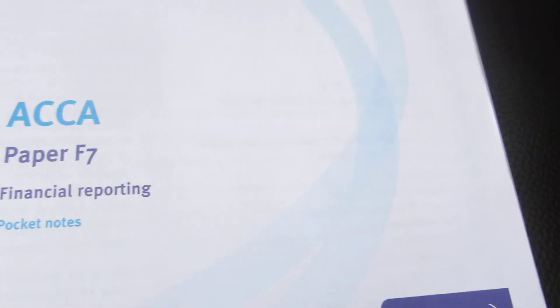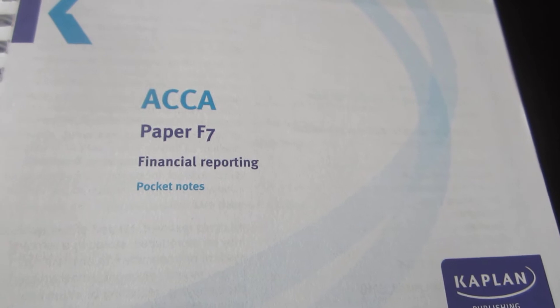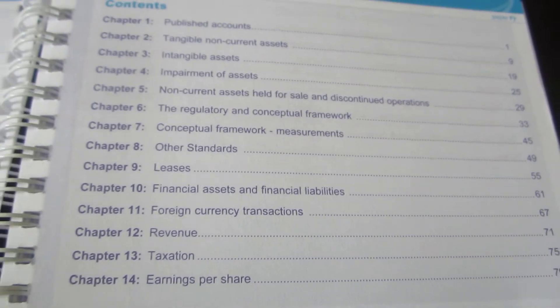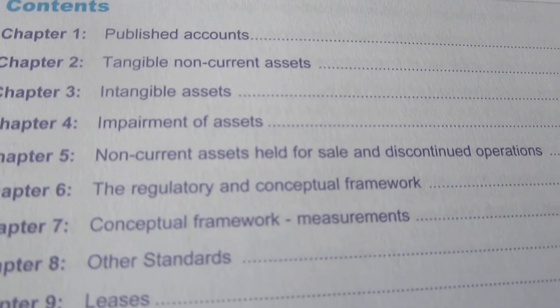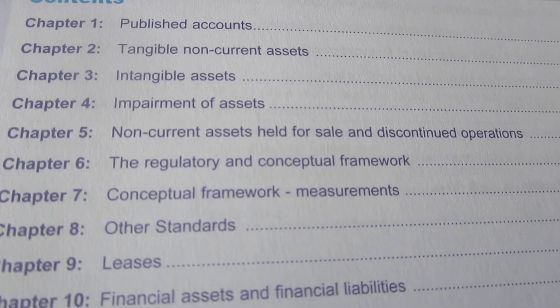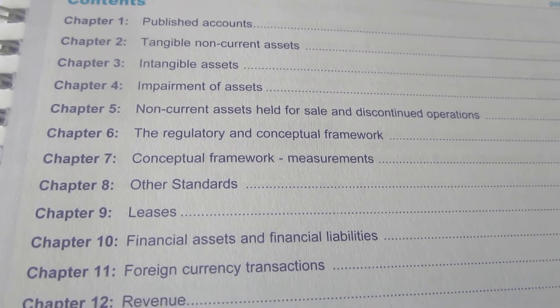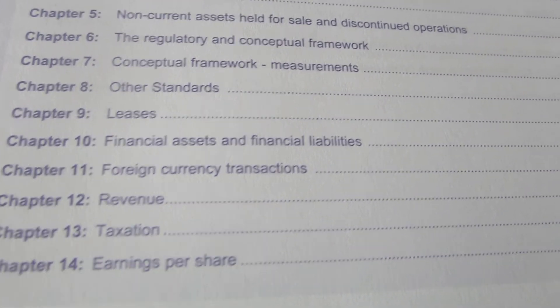Let's have a look. So the actual ACCA Paper F7 Financial Reporting pocket notes, go to the first page and we see here the table of contents. So you've got the published accounts, tangible assets, impairment of assets and so forth. We have 14 chapters.